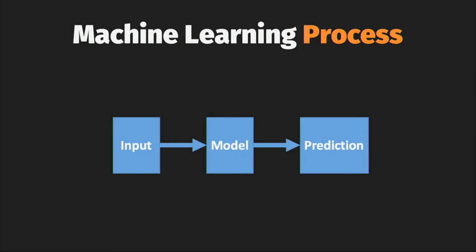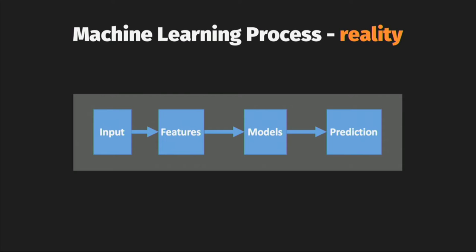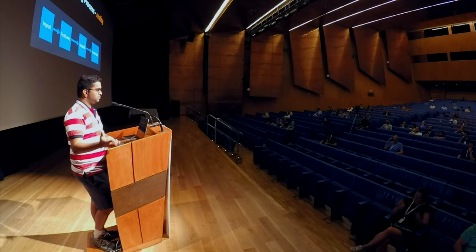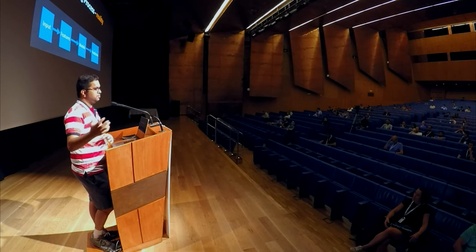What's the machine learning process? We have input that gets fed into a learning algorithm, which creates a machine learning model, and that's used to build predictions. That's what is taught in school, in any course. But in reality, the input data is in a different format. You have to transform, modify, clean, and do a whole lot of stuff before you create features from your input data.